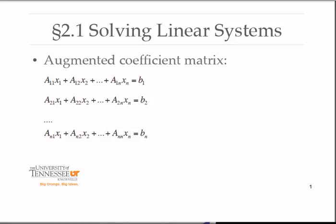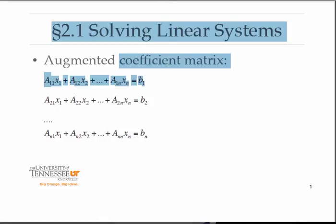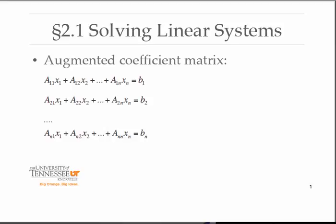The way you can define a linear system in terms of a matrix equation is to write a simple matrix times a vector and set that equal to another vector. We'll take each of these equations and write it as a matrix-vector product. We take each coefficient — starting with the first row: A1,1 then A1,2, continuing through A1n. Notice that the first subscript represents the row and the second subscript represents the column. That represents the first row of our matrix.